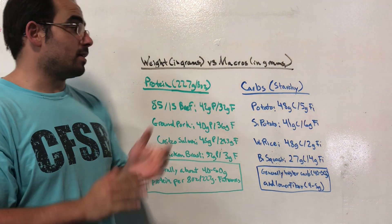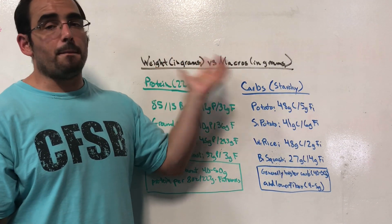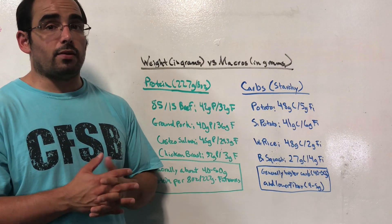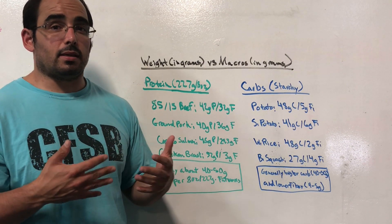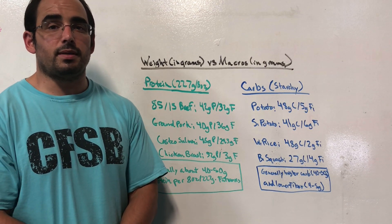All right guys, now hopefully you've got a good sense of the difference between the weight in grams of a food and the macro amount - protein, carbs, and fat in grams - of that food. And hopefully now you can see that there's a difference and hopefully that helps you weigh and measure your food. All right guys, thanks so much for tuning in. We'll see you next time.